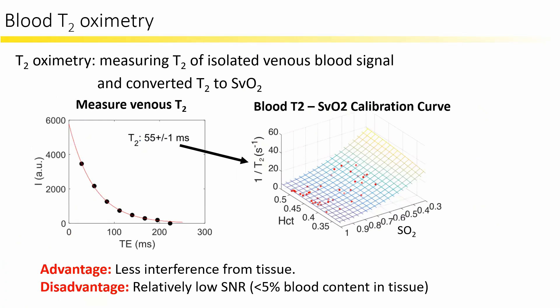T2 oximetry measures the T2 of the isolated venous blood signal and converts it to blood oxygenation. This approach has the advantage of less interference from tissue and a simpler model. However, due to low blood content in tissue, T2 oximetry mapping techniques could have low signal-to-noise ratio.